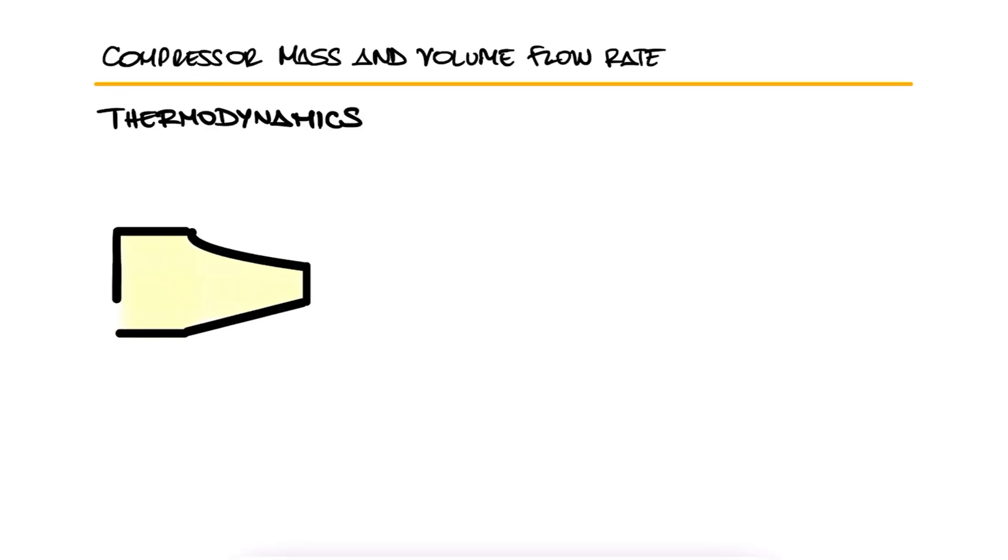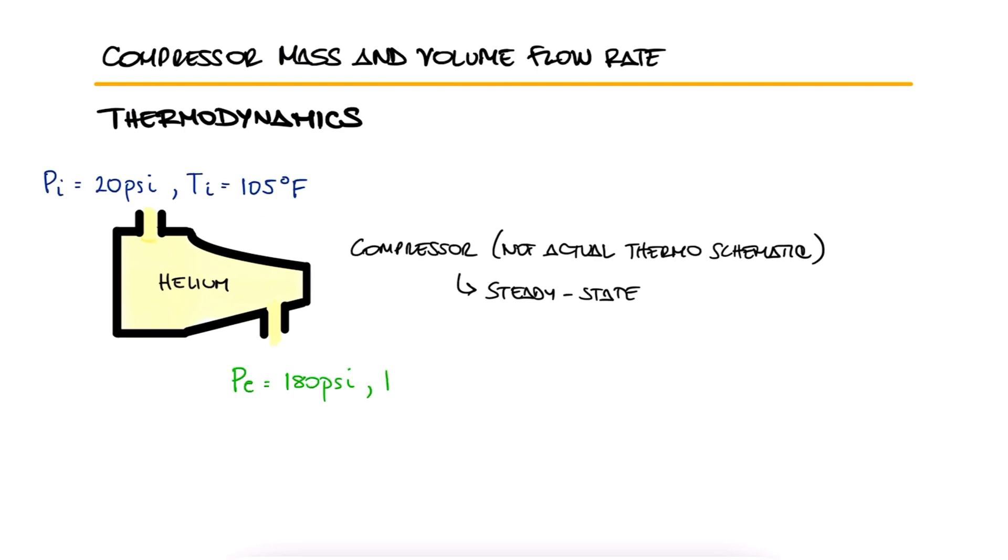A compressor in steady state is used to compress helium from 20 psi and 105 degrees Fahrenheit at the inlet to 180 psi and 580 degrees Fahrenheit at the outlet. The exit area is 0.02 square feet, the exit velocity is 95 feet per second, and the inlet velocity is 50 feet per second. Determine the mass flow rate and the inlet area.